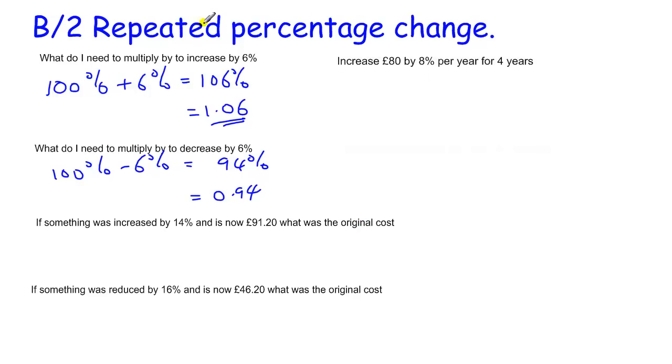Just to demonstrate, let's have a look at a couple of examples. Here's one: increase £80 by 8% per year for four years. To do that question, I start with my £80, I multiply by 1.08 because I'm finding 108% since I'm increasing by 8% each year. And I'm doing it over four years, so that is 1.08 to the power of four, and that would give me the answer.